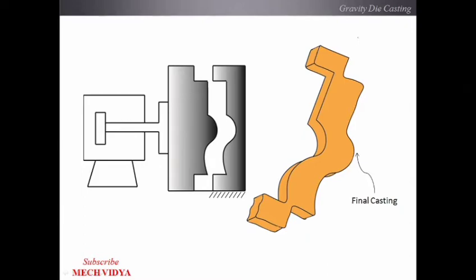If you need a spherical object, your mold cavity will be spherical in shape. If you need a rectangular casting, you have to create your die in the same manner. This was all about gravity die casting — here no force apart from gravitational force is applied to the molten metal.